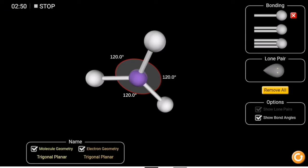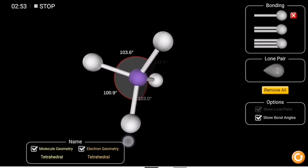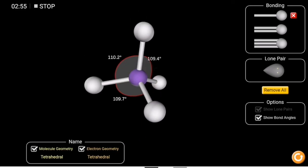Moving forward to AX4, this electron geometry is called the tetrahedral and also as a molecular geometry is called also tetrahedral. You can notice here that the angle is getting smaller, 109.5.